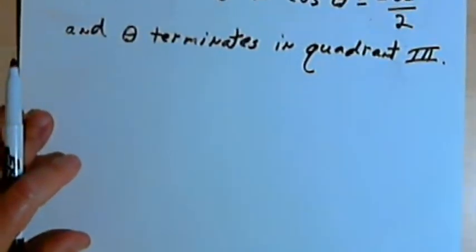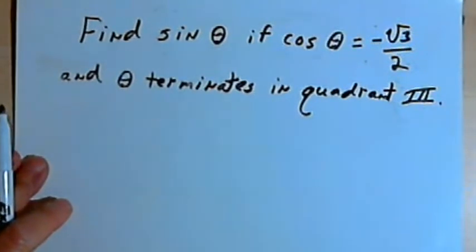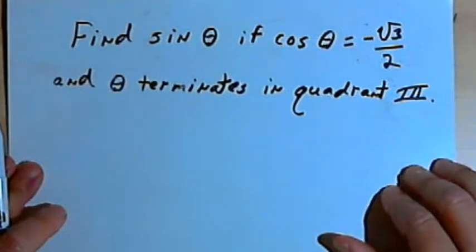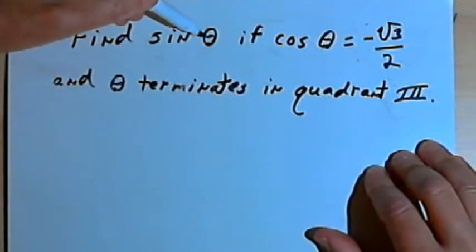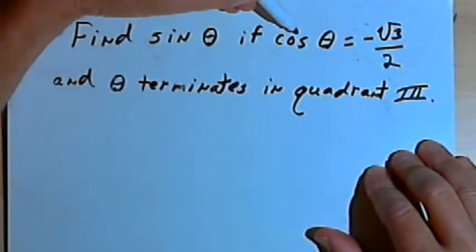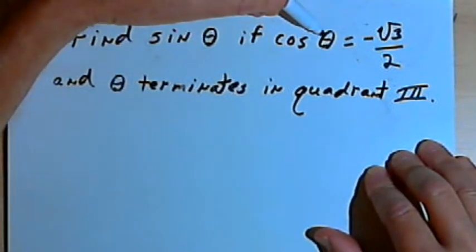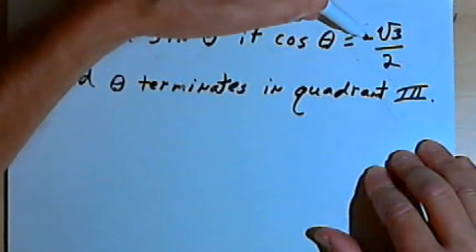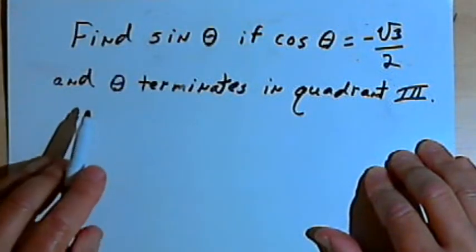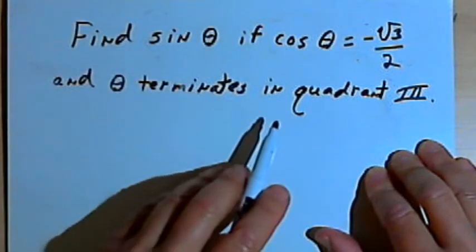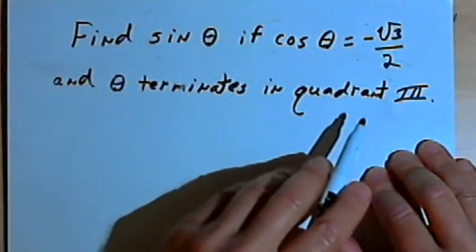Here's the first problem: find the sine of theta if the cosine of theta equals negative square root of 3 over 2, and theta terminates in quadrant 3.